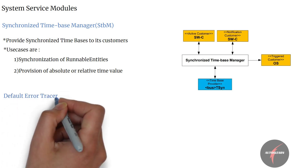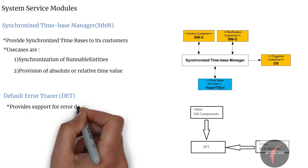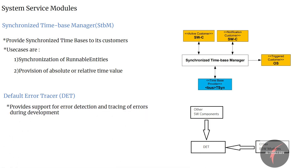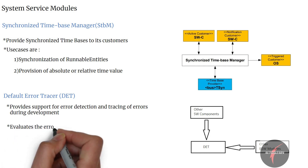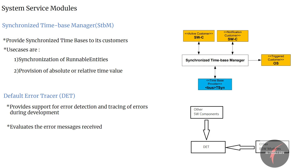Then we have the Default Error Tracer, also called DET. The Default Error Tracer provides functionality to support error detection and tracing of errors during development and runtime of software components and other basic software modules. For this purpose, the DET receives and evaluates error messages from these components and modules.